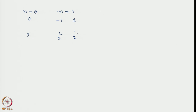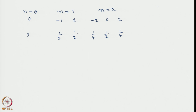Let us look at what happens at n equal to 2. Using evenness-oddness and symmetry information, the walker could be at minus 2, 0, or plus 2. For n equal to 2 at m equal to 0, his probability will be half because it should be symmetric. Once we know one of them we can write down the others. For n equal to 3, the sites are minus 3, minus 1, plus 1, and plus 3.